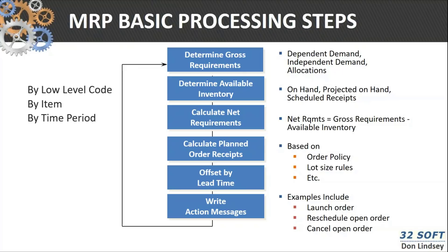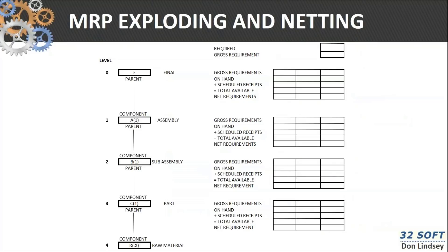This is done by low-level code — we'll talk about low-level code in just a second — by item, by time period. If you look at an example of this MRP explosion: if we've got a requirement for level-zero parent E, that means we have a gross requirement at the level-one component A1. The net requirement of the parent becomes the gross requirement of the component. Then we look at on-hand and scheduled receipts to come up with total available. Instead of needing 100 of component B1, we actually only need 73.